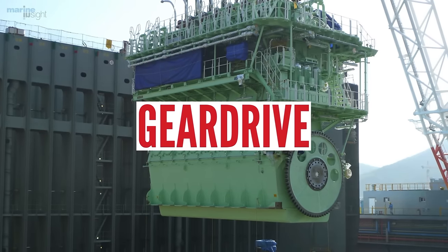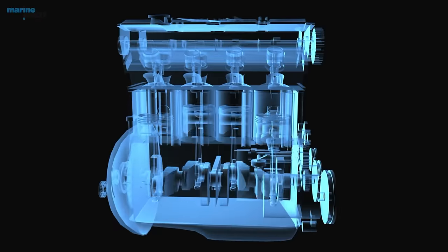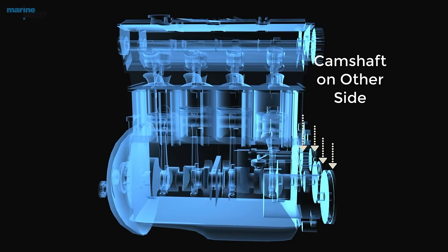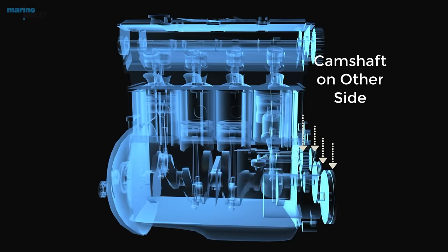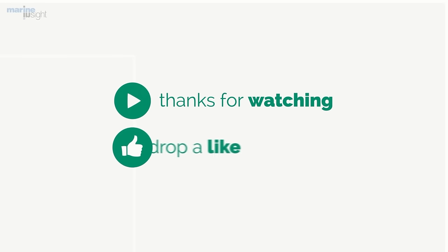Gear drive: Camshafts are driven either by gears or chains. In the case of gear drive, a train of gear wheels is fitted which transmits the drive from the crankshaft to the camshaft. If you found this video useful, please do like and share it and don't forget to subscribe to our channel.